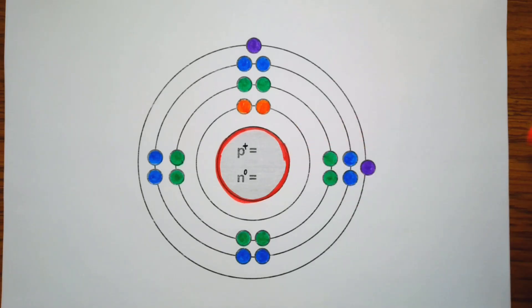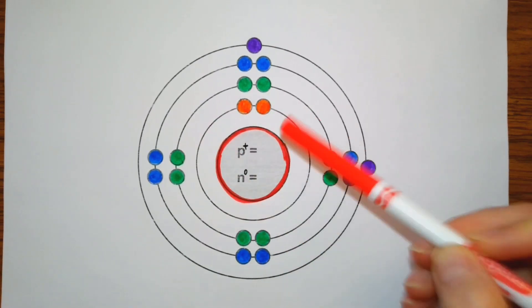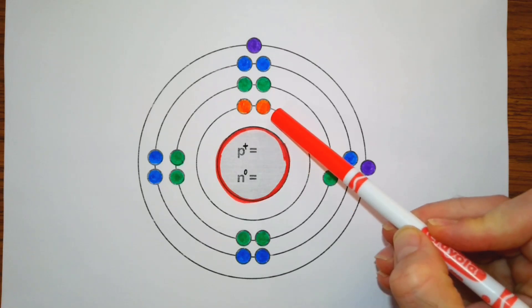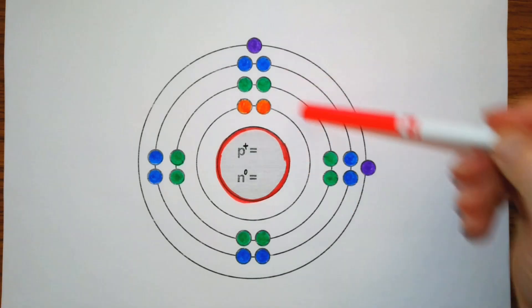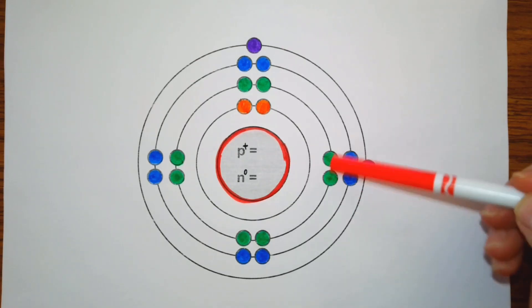Okay, so this works for up to four orbitals. Our first orbital can hold a maximum of two electrons, which I have here in orange. Our second orbital can hold a maximum of eight electrons, which I have in green.